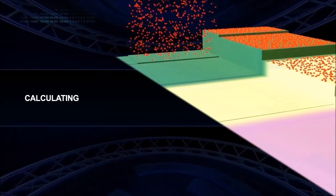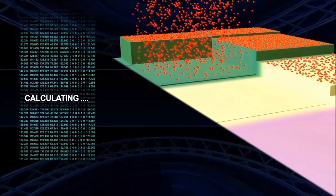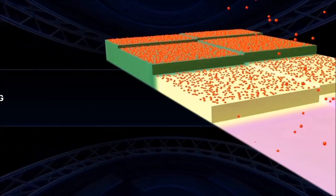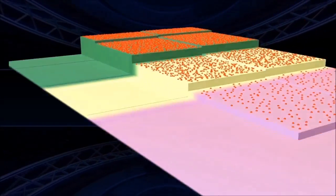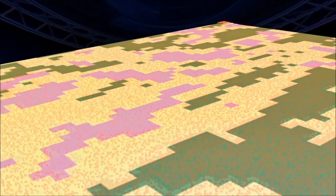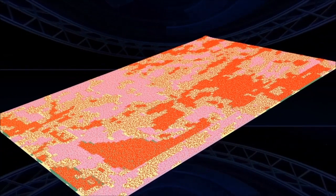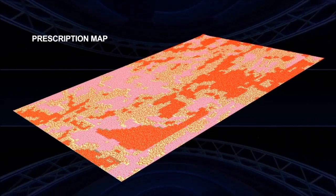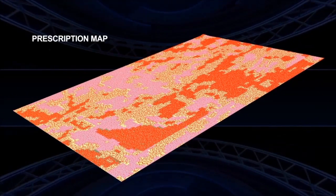In this video the prescription map is shown as having three levels of seed or fertilizer. Although many more levels are possible, most farmers can make great economic use of just the low, medium, and high rates.